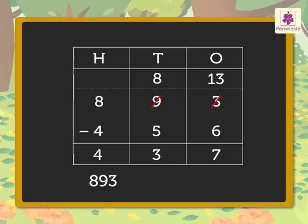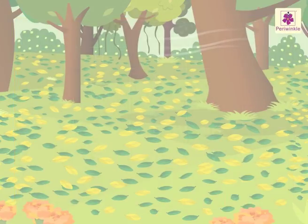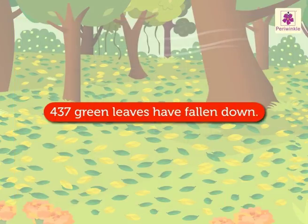Thus, eight hundred ninety-three minus four hundred fifty-six is equal to four hundred thirty-seven. Hence, we conclude that four hundred thirty-seven green leaves have also fallen down.